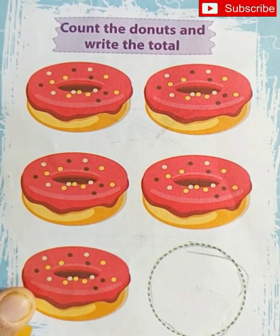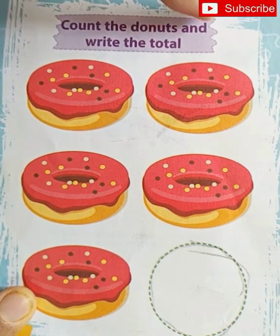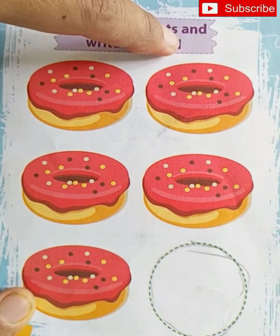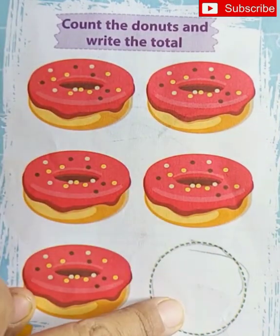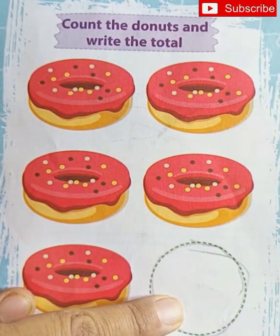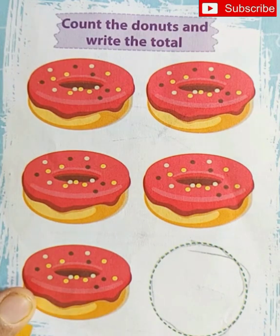First activity is count the donuts and write the total. You have to count all donuts and write here in this circle. Okay? Are you ready?